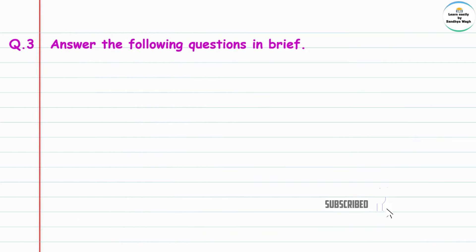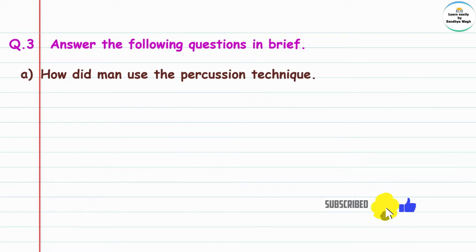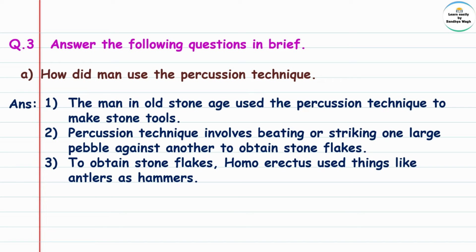Question 3: Answer the following questions in brief. A: How did man use the percussion technique? Answer: The man in the Old Stone Age used the percussion technique to make stone tools. Stone tools were made by this method.